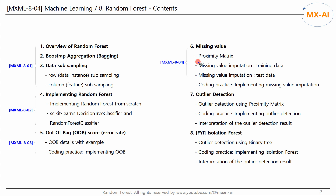So far, we've looked at how to estimate missing values in training and test data using the proximity matrix. In the next video, we'll write code to estimate the missing values using the proximity matrix.